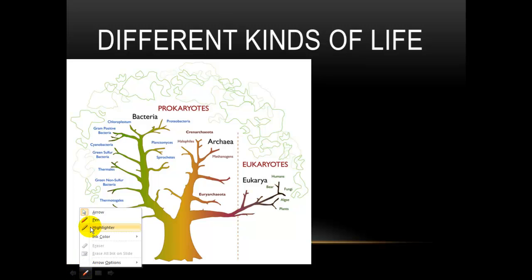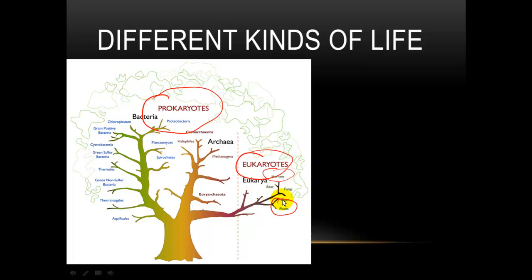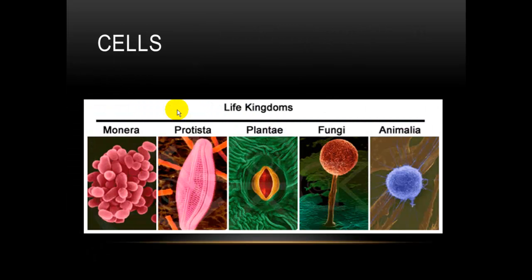However, you do need to understand that there are three kinds of life on this planet. There is prokaryotic life. There is eukaryotic life. And then, we can subdivide eukaryotic life into animals and into plants. We do need to understand this. And this is one of our first focuses of trying to understand, can we compare these three things? Plants, animals, and prokaryotes.